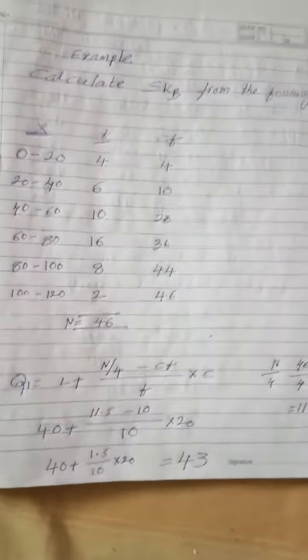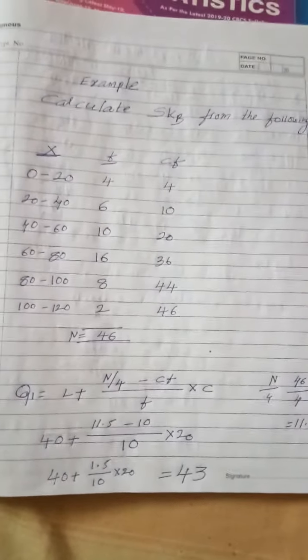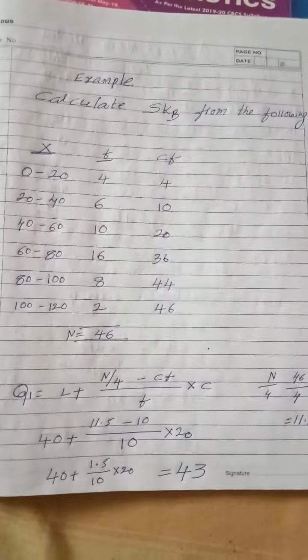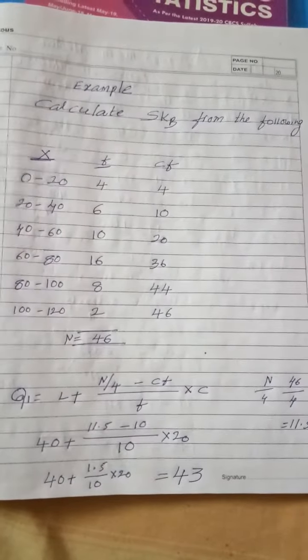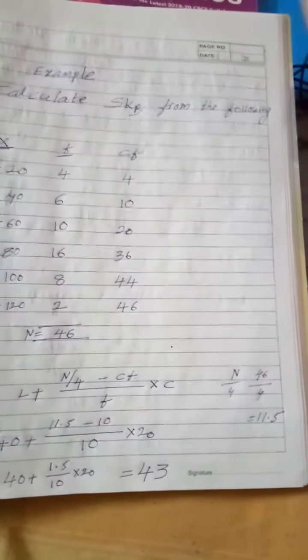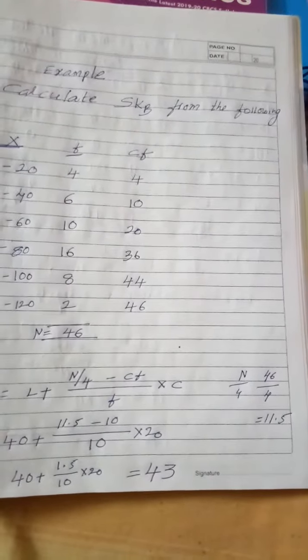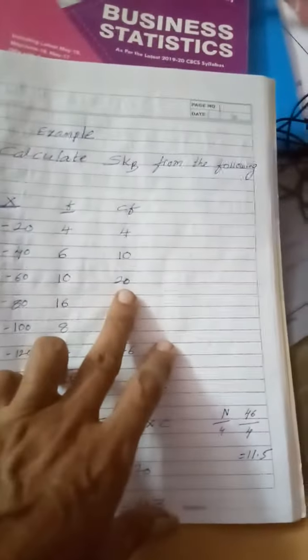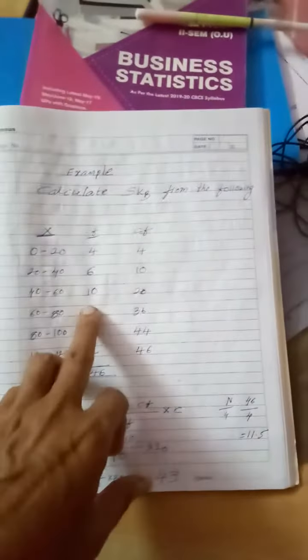Now we will substitute the formula. Q1 is equal to L plus N by 4 minus CF by F into C. I will show you Q1. N by 4 is 11.5. 11.5 falls in the 20 to 40 class. So we will change my formula. I will substitute F as 10 and CF as 10.